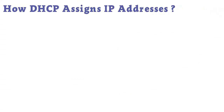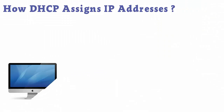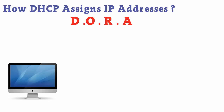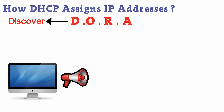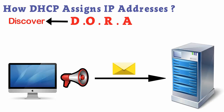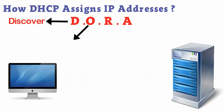How DHCP assigns addresses: When you add a computer to a network, that computer uses a four-step process to get an IP address from DHCP. The first step is Discover — the computer sends out a broadcast message on the network, hoping to discover a DHCP service provider.